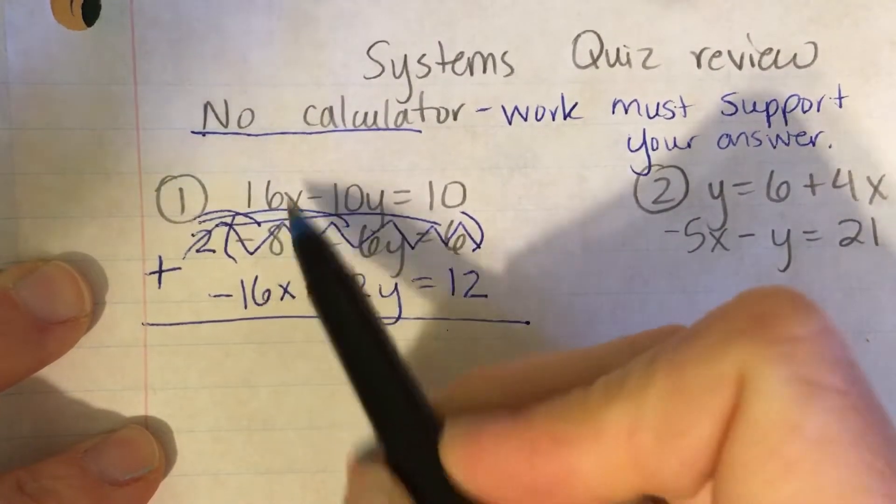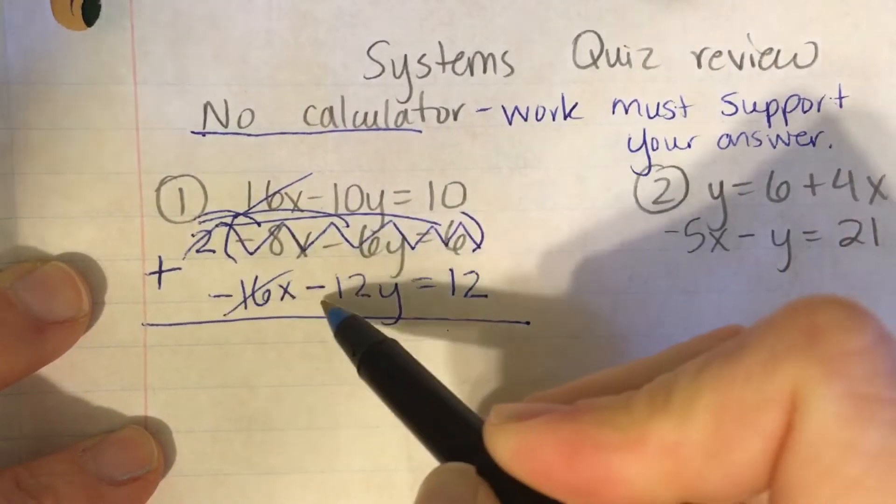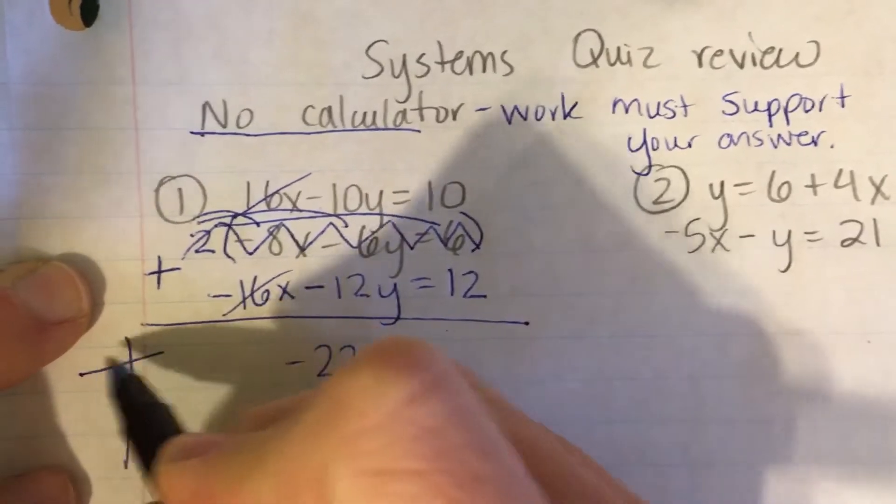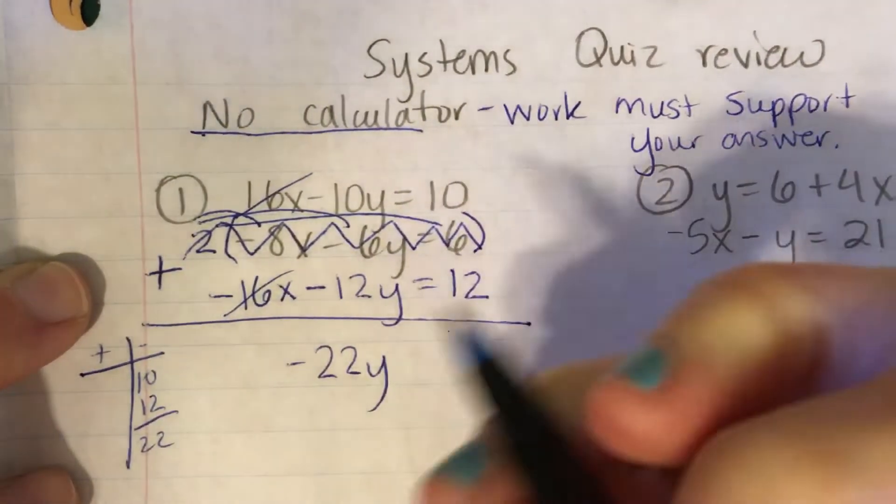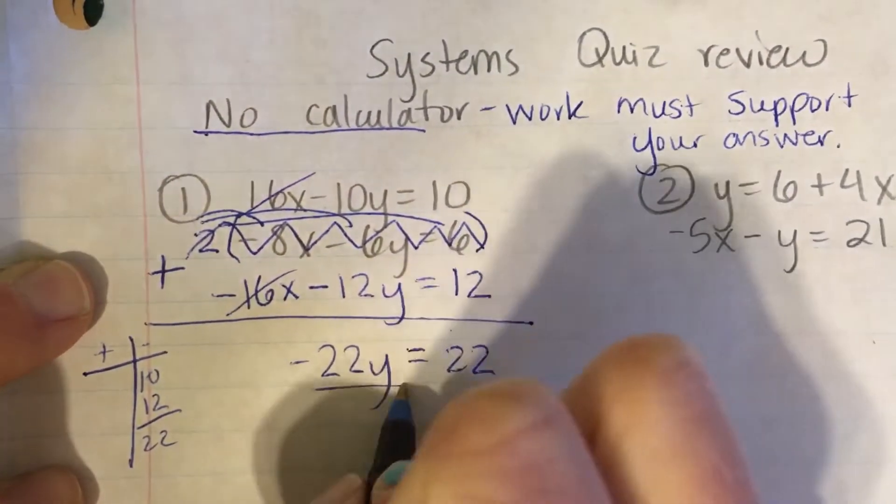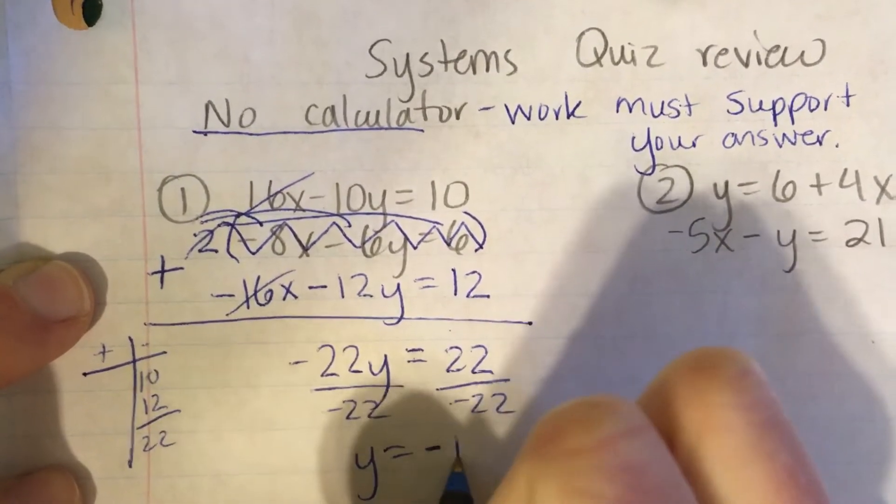I'm going to mark this one out and I'm going to add the top equation and the second equation. 16x and negative 16x cancel. That's why I did it. Negative 10 plus negative 12 is negative 22. They line up, add up. You can come over to the side and do your chart. They line up, add up. Alright, and then 10 plus 12 is 22. Divide by negative 22 and y is negative 1.